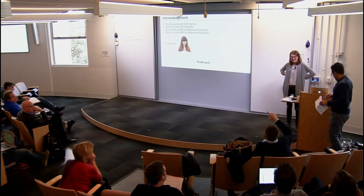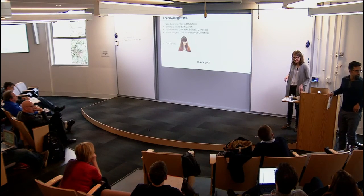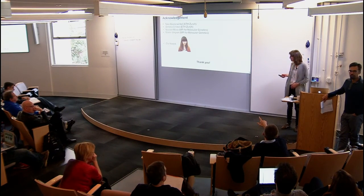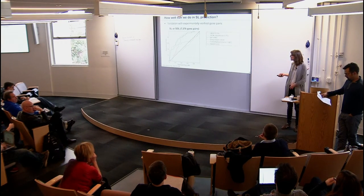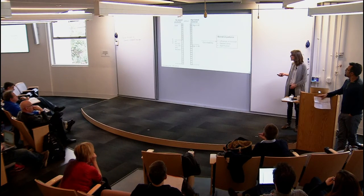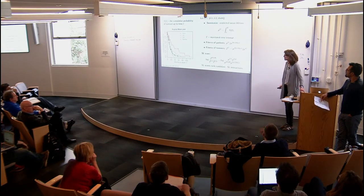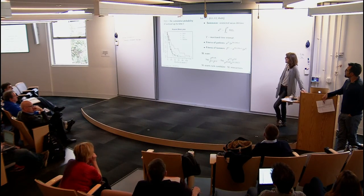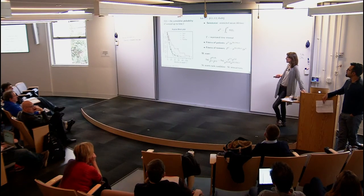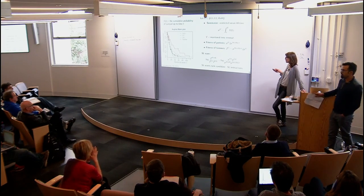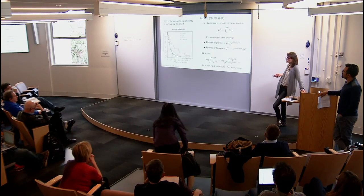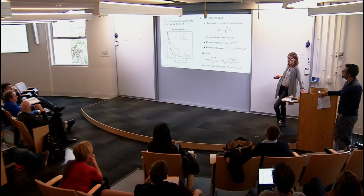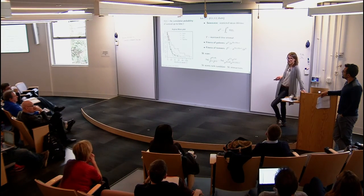Your SL score looks exactly like what you'd call epistasis. Yes, exactly. So why does it capture only negative interactions — shouldn't it also pick up positive ones? There has to be some sign — if it goes one way, the ratio would be either larger or smaller than one. So yes, I'm looking only in one direction.